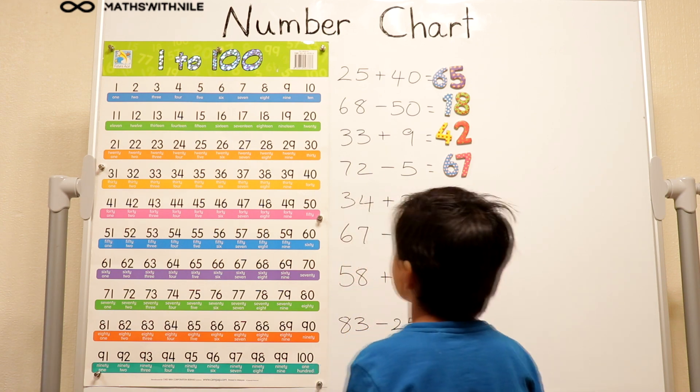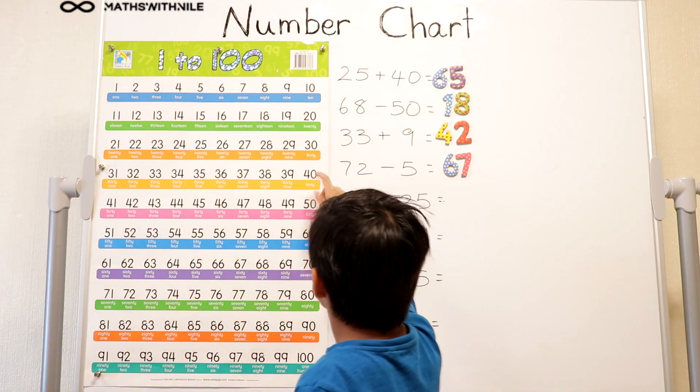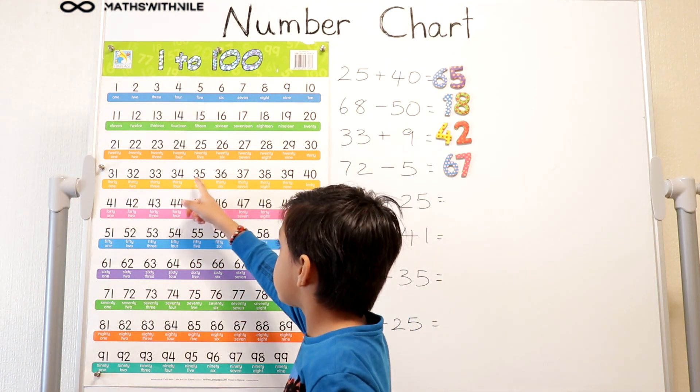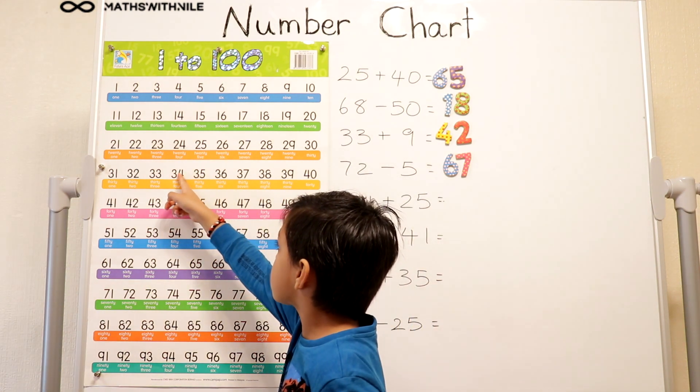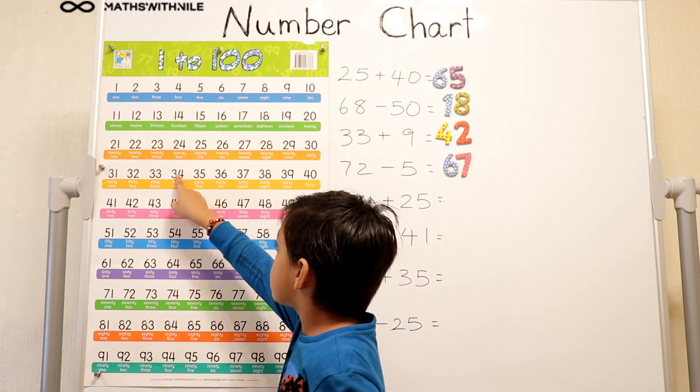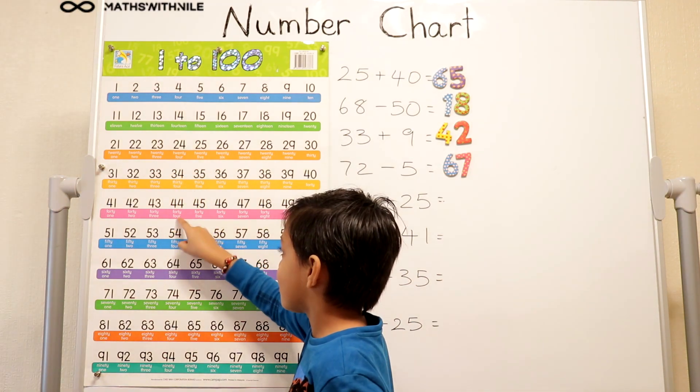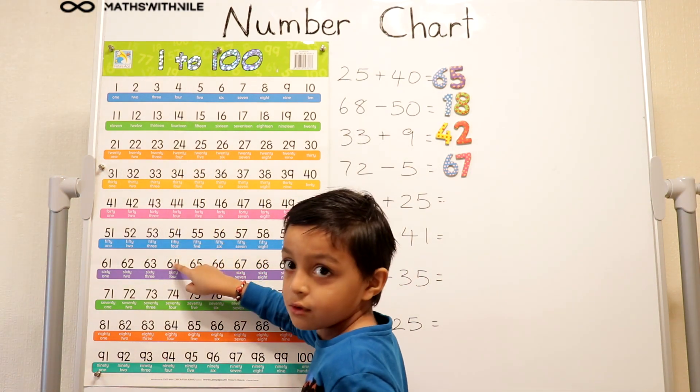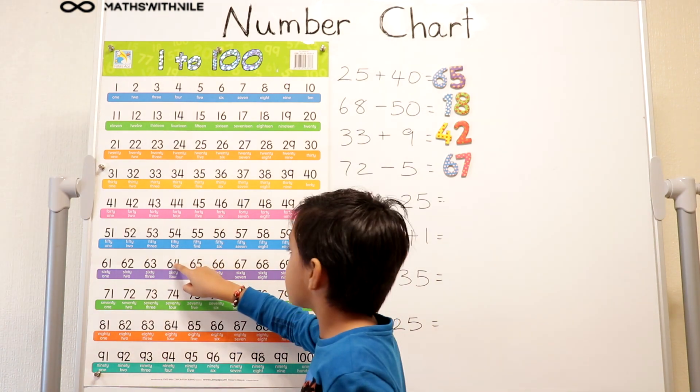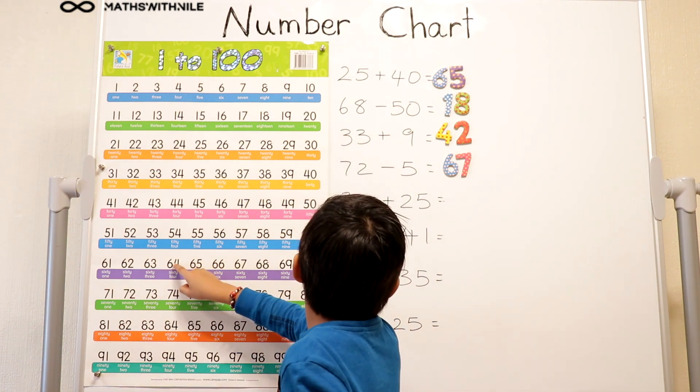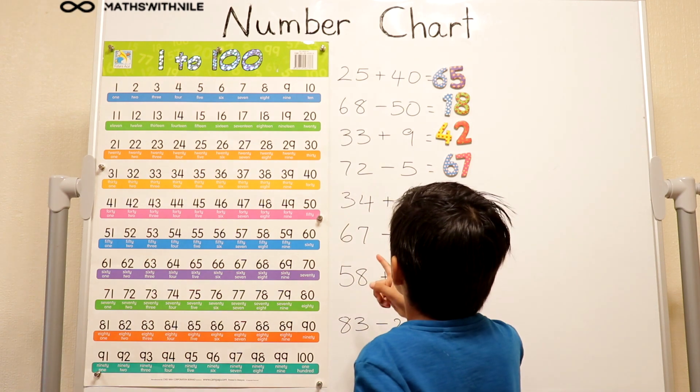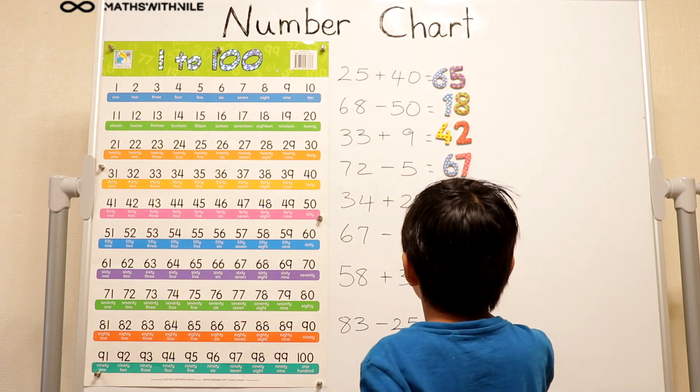34 plus 25. So we got 34 plus 10, 20, 30. It doesn't say 30. Look at the question. Make sure you know what you're doing. 34 plus 25.